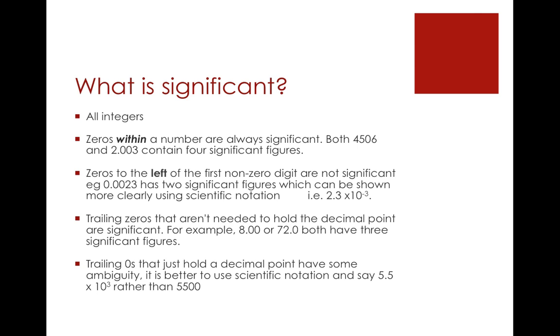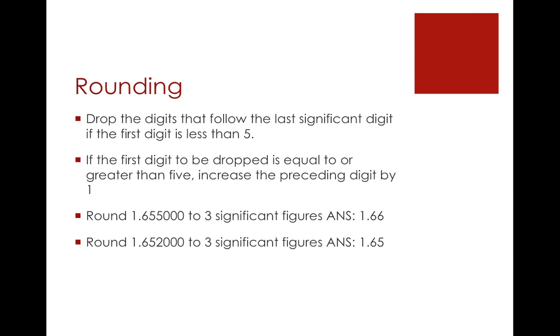When we round, we round mathematically. We look at the number that's just after the last significant figure and we round it. So 1.655 to three sig figs: the one, the six, and the five are significant figures, but this five has to round up so it becomes 1.66, as opposed to 1.652—that two is less than five, so it's going to round down.